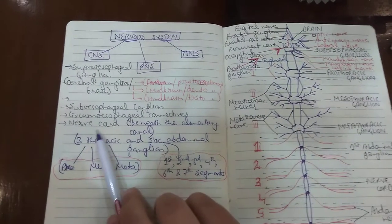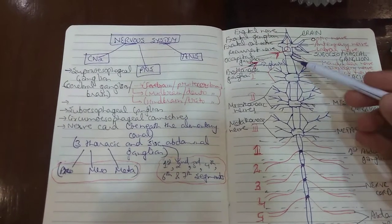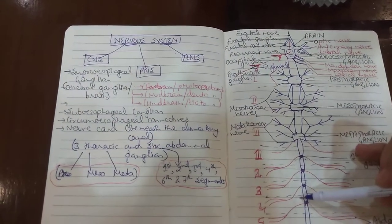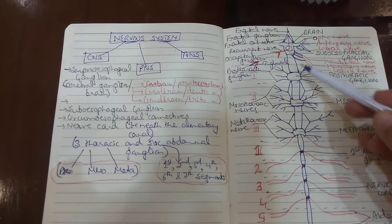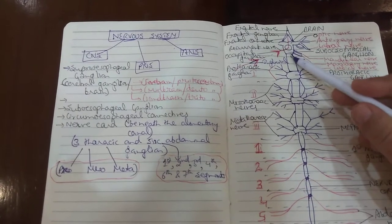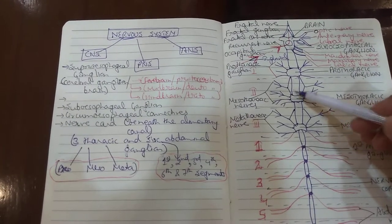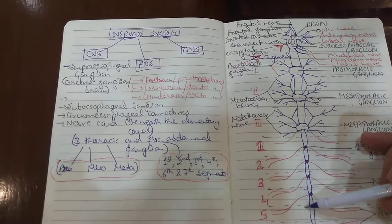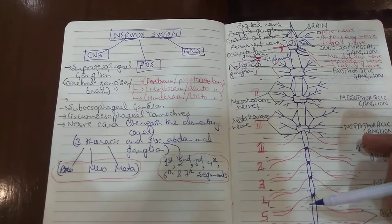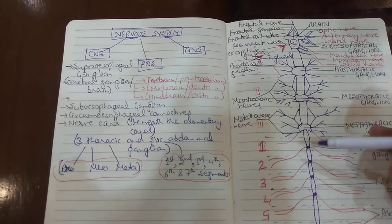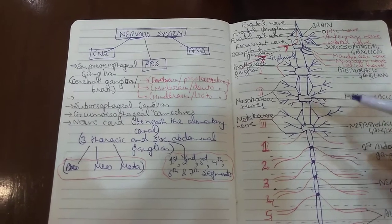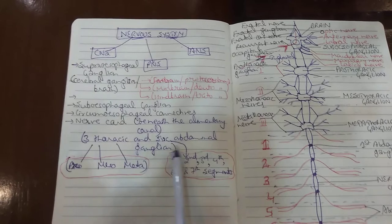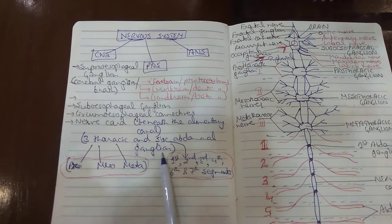Then comes the nerve cord. The nerve cord starts from the subesophageal ganglion and runs backward through the thorax and abdomen beneath the alimentary canal. It is solid, double, and mid-ventral. It bears nine segmental ganglia — three in the thorax region and six in the abdominal region.